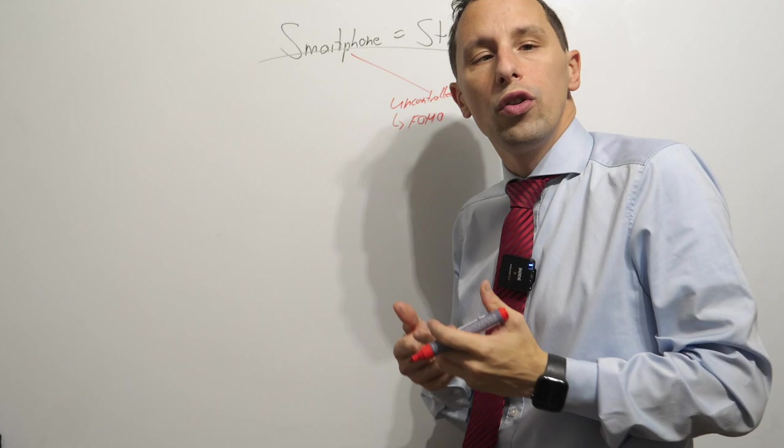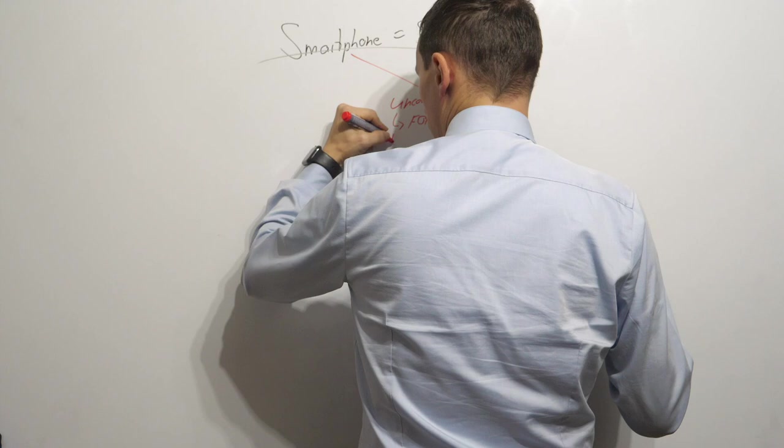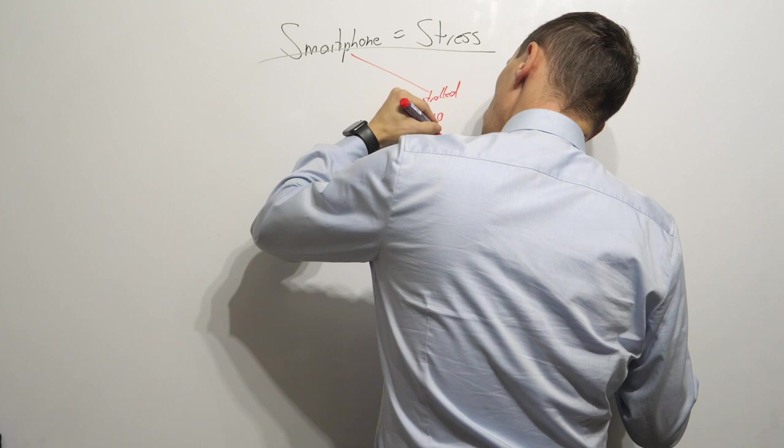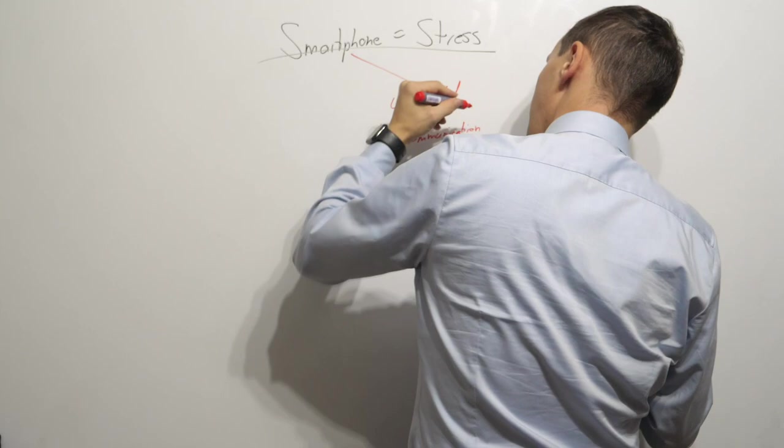They constantly think they need to know the newest thing. They might fear out of something. Another thing which happens in this uncontrolled way is communication. We do think that we need to communicate all the time, which again causes stress.